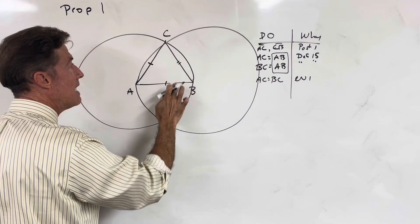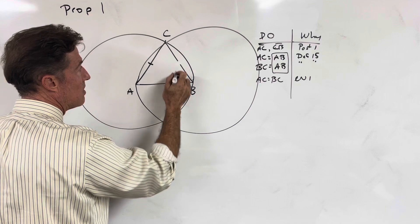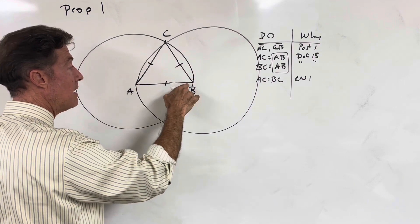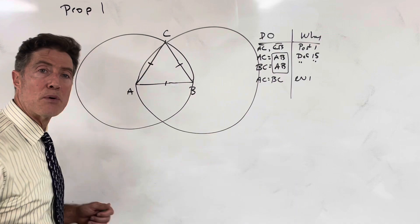Therefore, all three lines in this triangle are equal. Therefore, we have constructed on line AB an equilateral triangle.